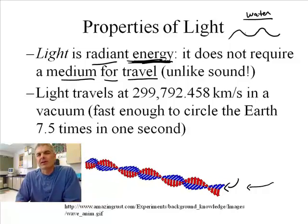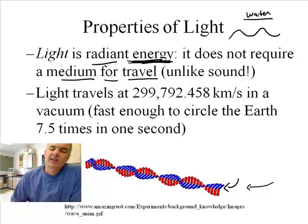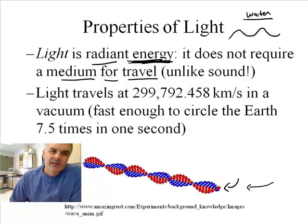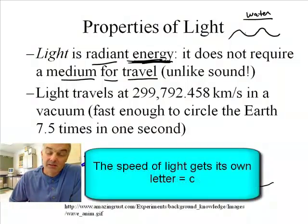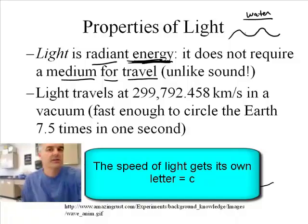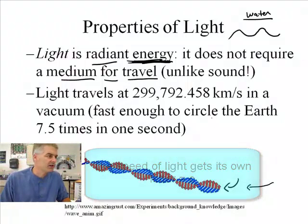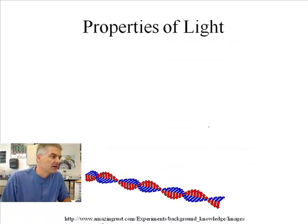Light travels very, very fast. In fact, it can travel around the Earth seven times in one second. Seven and a half, actually. It's very, very fast. And this is, by the way, noted as the speed of light we call c.